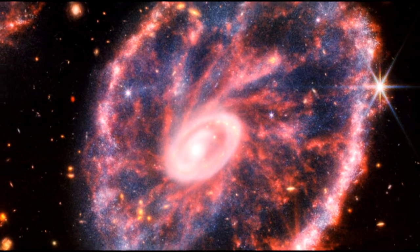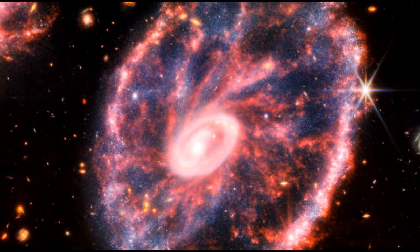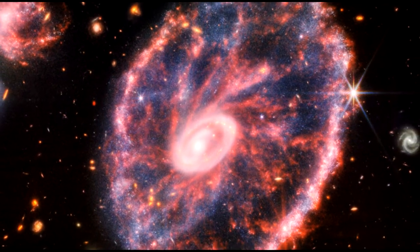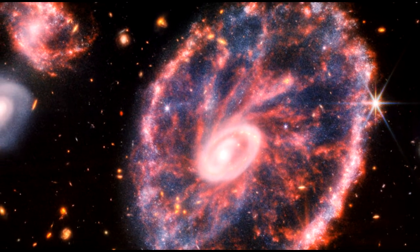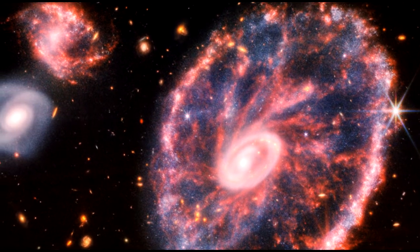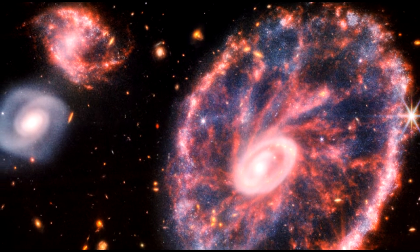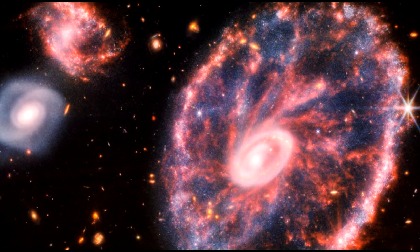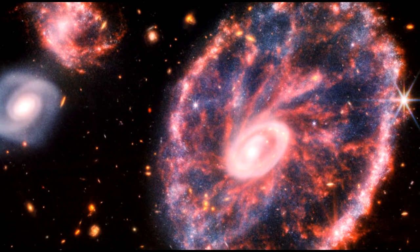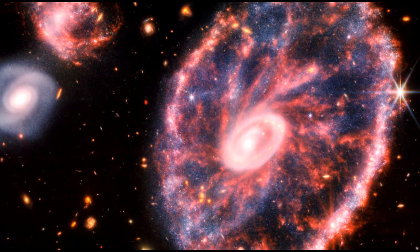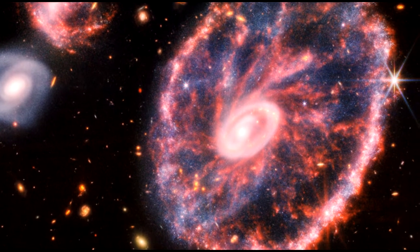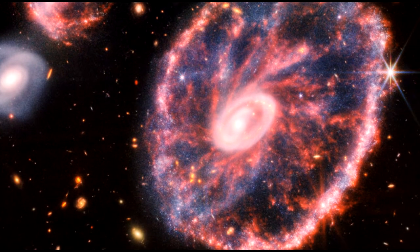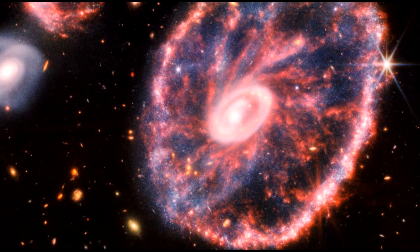This chaotic and beautiful image you are looking at is the Cartwheel Galaxy, revealing new details about star formation and the galaxy's central black hole. Webb's powerful infrared gaze produced this detailed image of the Cartwheel and two smaller companion galaxies against a backdrop of many other galaxies. This image provides a new view of how the Cartwheel Galaxy has changed over billions of years.